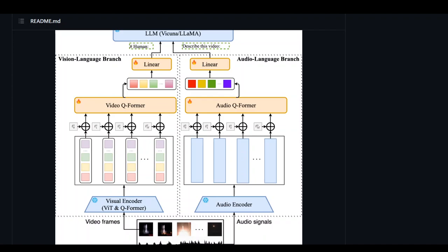Surprisingly, training of the Audio Language Branch is also performed with visual-text data, which exhibits a zero-shot comprehension property during inference, owing to the power of ImageBind that shares a common feature space for all modalities. The resulting model is capable of integrating audio-visual signals, grasping common knowledge concepts, and capturing temporal dynamics in videos.